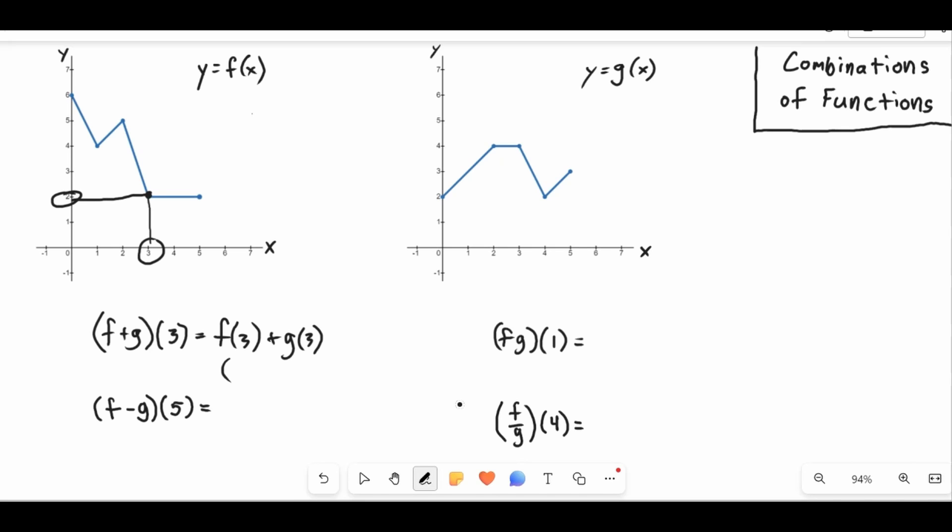And so f(3) is equal to 2. So this is 2 plus, and now what's g(3)? Well, if we go to the input of 3, we'll go up here, and there is 3, we'll go over, and it looks like g(3) is 4. And so really, f plus g of 3 is just simply 2 plus 4, which is 6.